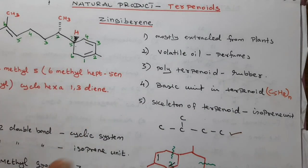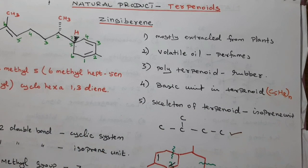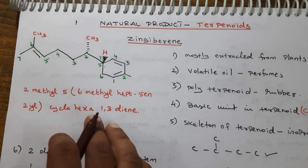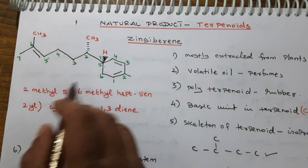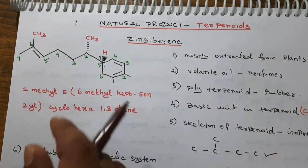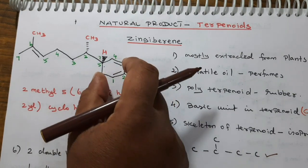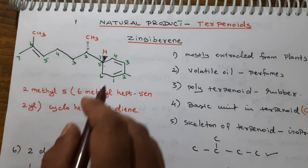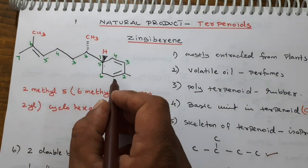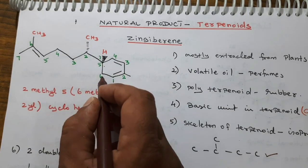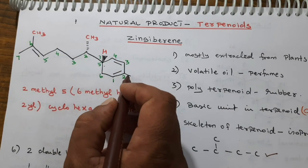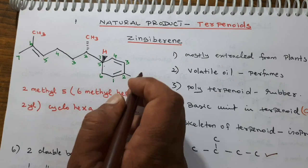We are going to talk about the basic unit and the different units. Now we are going to talk about the numbering — the naming is very important. The numbering goes 1, 2, 3, 4, 5, 6 anti-clockwise. The methyl group is at position 2.